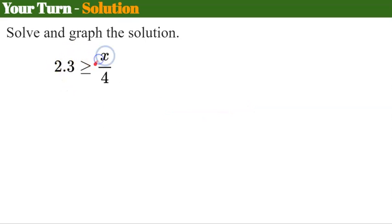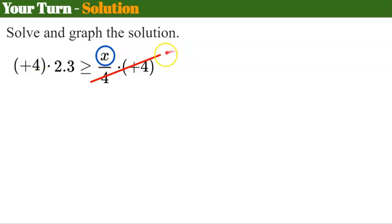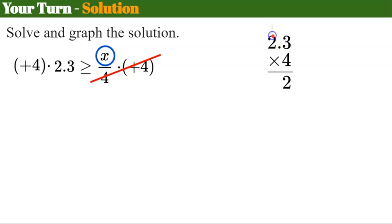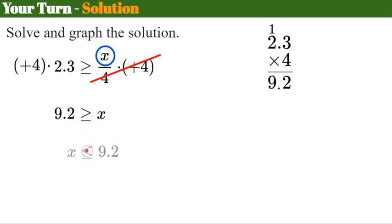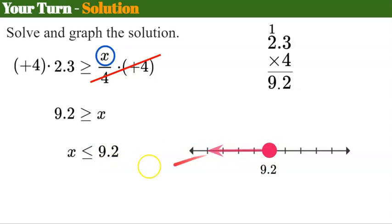Welcome back. x is being divided by 4, so the inverse is to multiply both sides by 4 — a positive value. That leaves x ≥ 2.3 × 4. Calculating: 2.3 × 4 = 9.2. So 9.2 ≥ x, which we flip to x ≤ 9.2. On the number line, place 9.2 with a closed circle and shade to the left because it's less than or equal to.